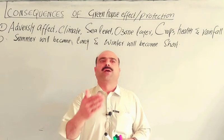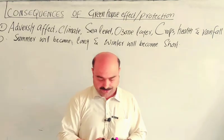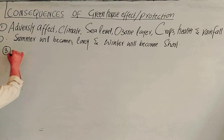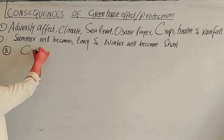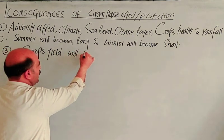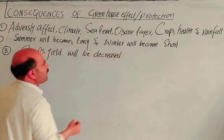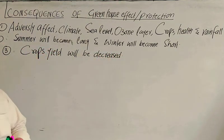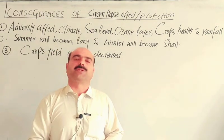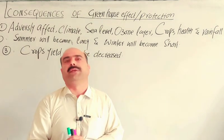The crop production and crop yield will be decreased due to the increased temperature and altered seasons caused by the greenhouse effect.